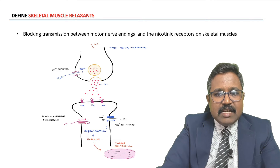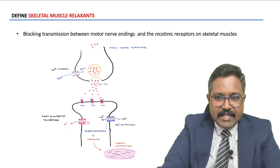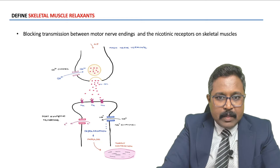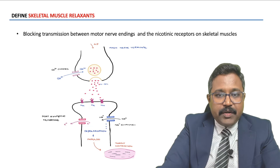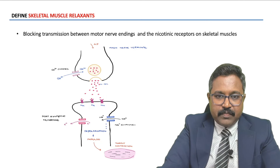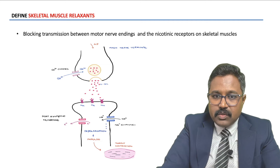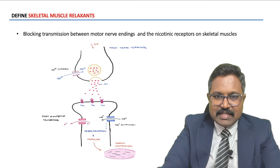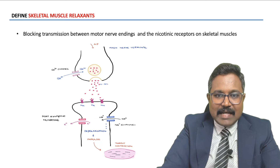Skeletal muscle relaxants have many target sites. Either these drugs can block the NM receptor directly, make NM receptors down-regulated, make NM receptors desensitized, or block depolarization by persistent depolarization. All of this can lead to decreased impulse generation, decreased sodium influx, and decreased action potential generation, which leads to muscle relaxation.